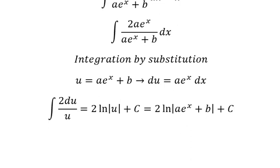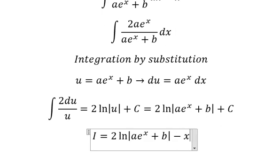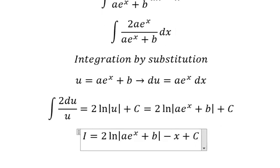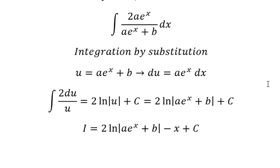Now we combine the answer: x - 2ln|ae^x + b| + c. This is the end. Thank you for watching.